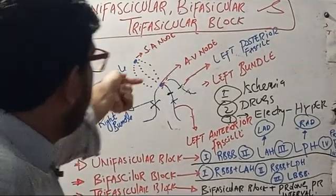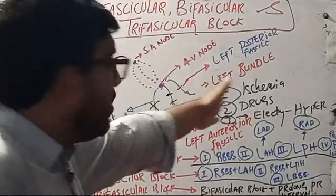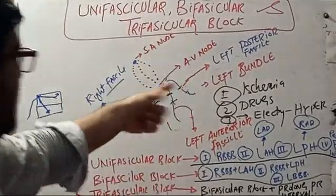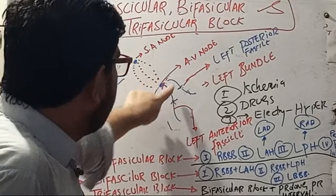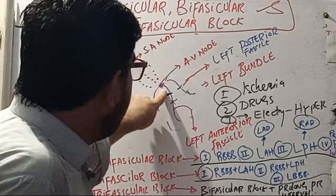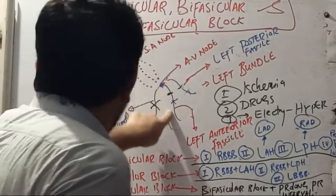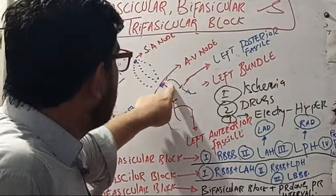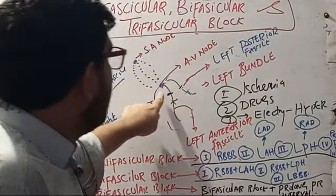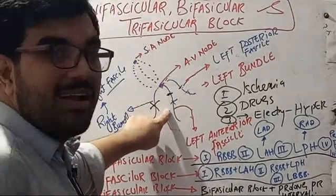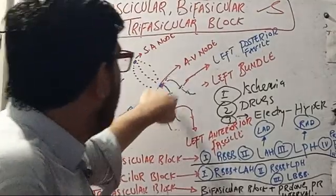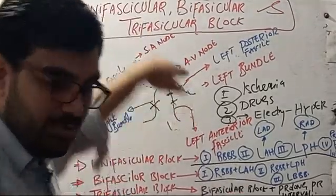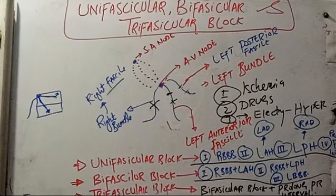The purpose was to give you the concept that the left bundle branch is divided into two fascicles. The left anterior fascicle causes left anterior hemiblock, and the left posterior fascicle causes left posterior hemiblock. Left anterior hemiblock causes left axis deviation, and left posterior hemiblock causes right axis deviation. Thank you for watching.